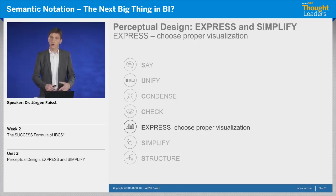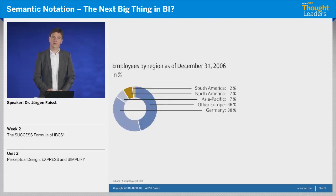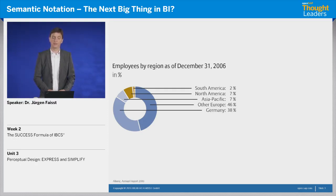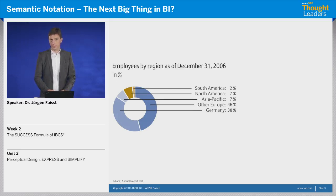Now that we know what message we want to convey, we can think about how to visualize it — it's about choosing the proper visualization. I would like to explain that by looking at an example from a big German insurance company. This insurance company has in an annual report a pie chart showing the shares of employees by region. For instance, you see that in Germany they have 38% of all employees. The question is: what is the message of such a chart?